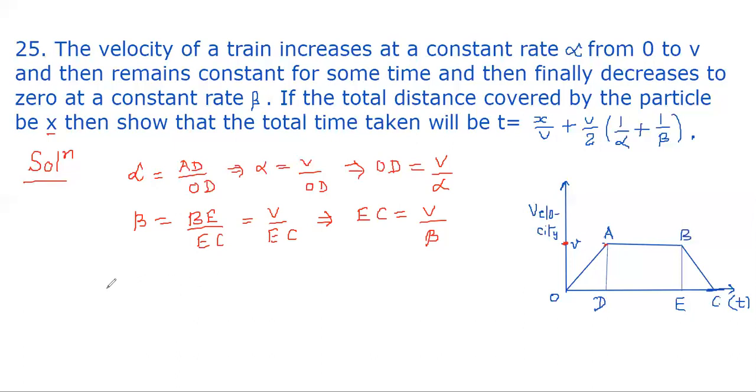Now, distance covered x equals the area under the velocity-time graph. The area can be found using the formula for area of a trapezium: sum of parallel sides, that is AB plus OC, multiplied by the perpendicular, divided by 2. So that is (AB + OC) multiplied by AD.